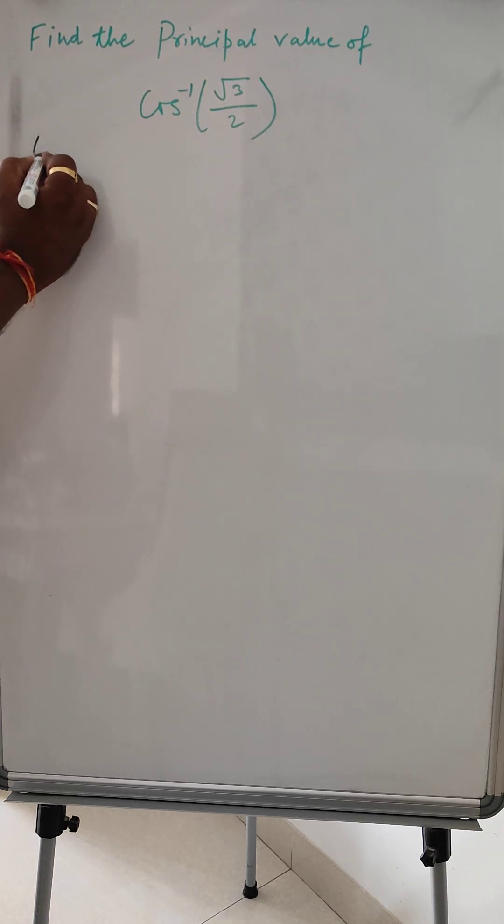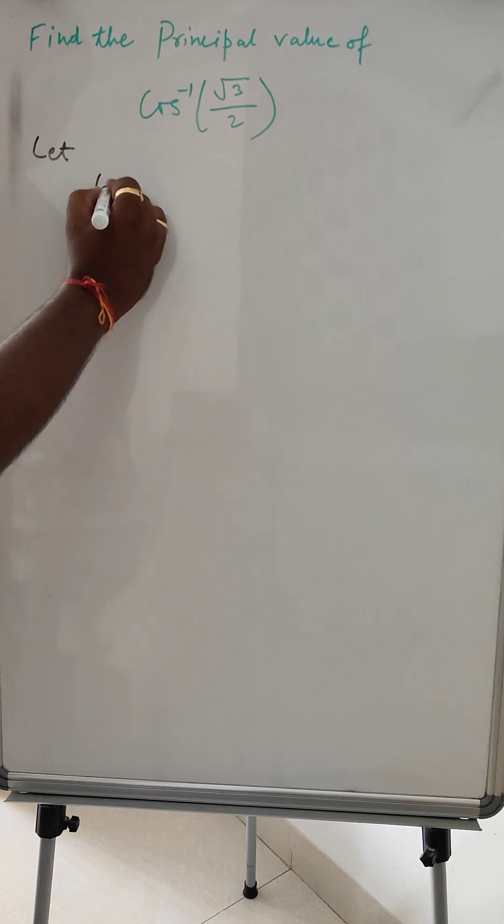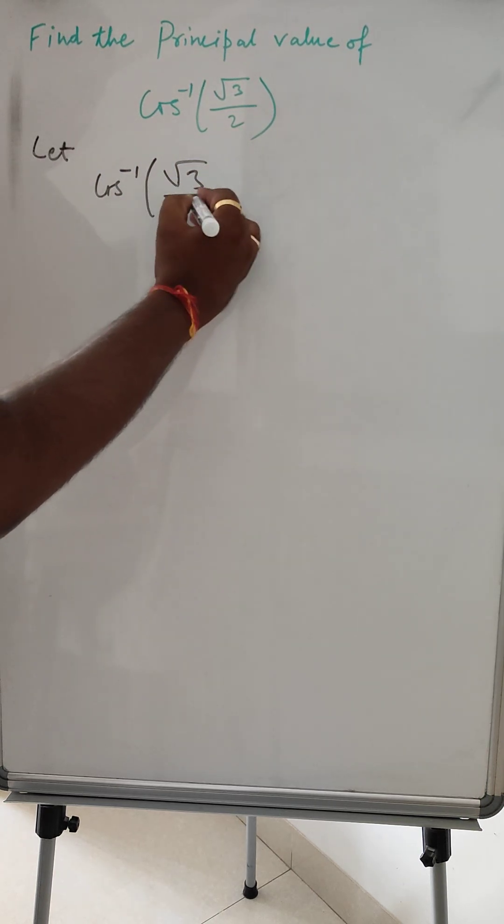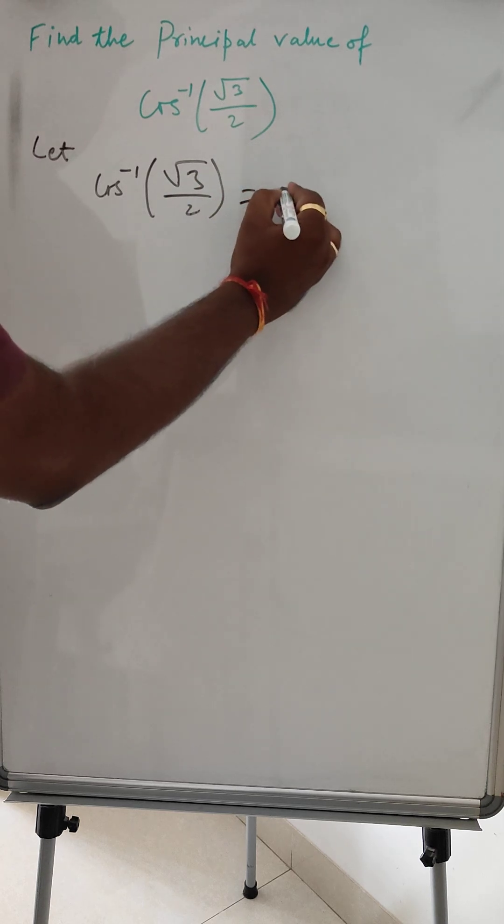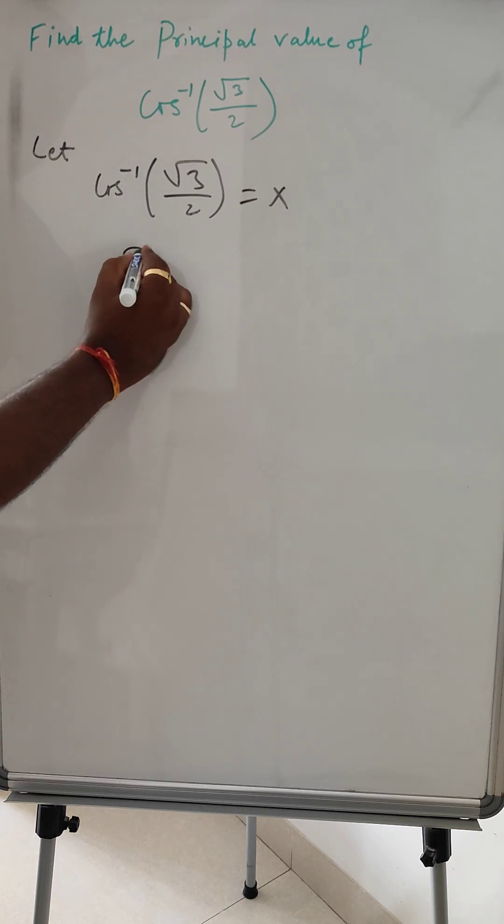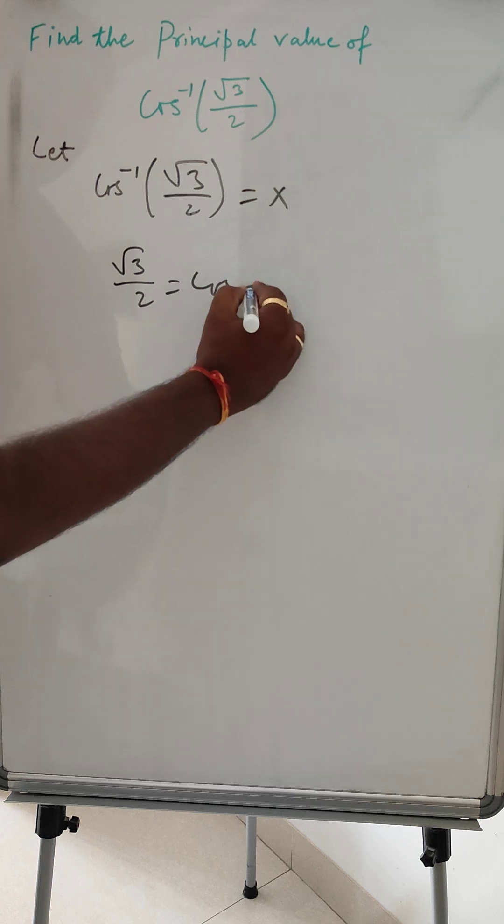First, let cos inverse of √3/2 equal x. Then we can write √3/2 equals cos x.